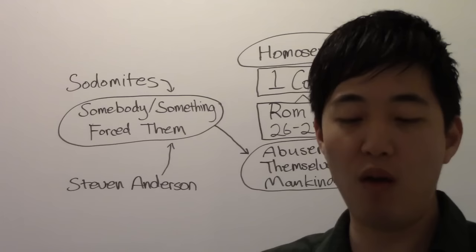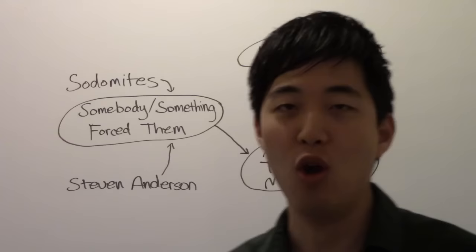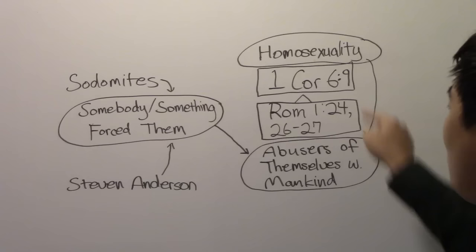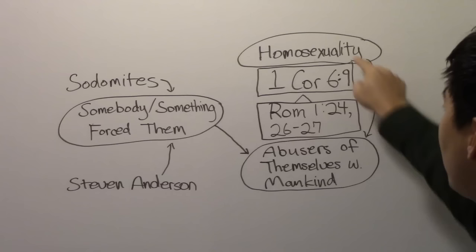The Bible already defined to you what abusing of themselves with mankind is. Romans 1. They were abusing themselves, their own bodies. They were going against themselves by doing this homosexual action.